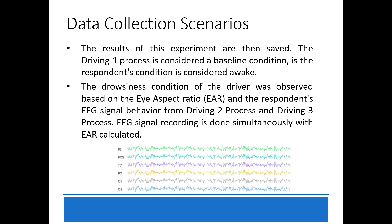The results of this experiment are then saved. The driving 1 process is considered a baseline condition, in which the respondent's condition is considered awake. The drowsiness condition of the driver was observed based on EAR and the respondent's EEG signal behavior from driving 2 process and driving 3 process. EEG signal recording is done simultaneously with EAR calculation.